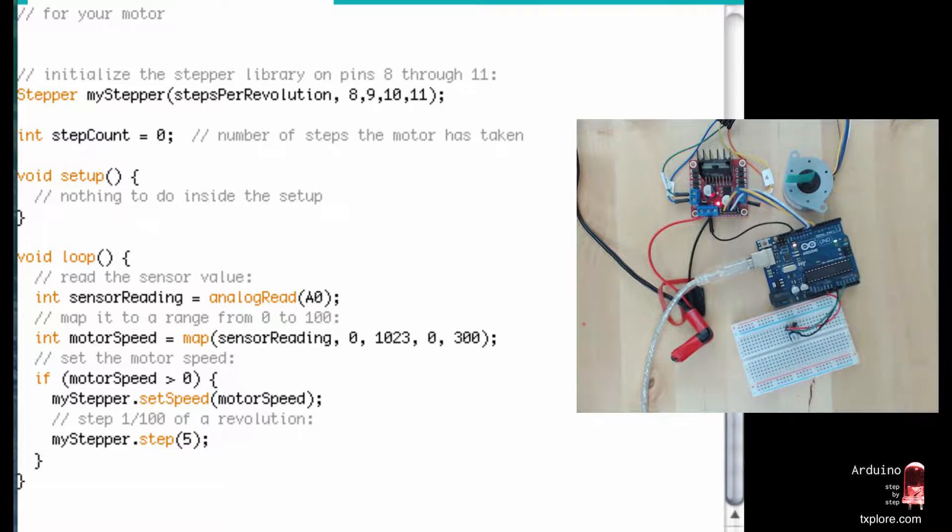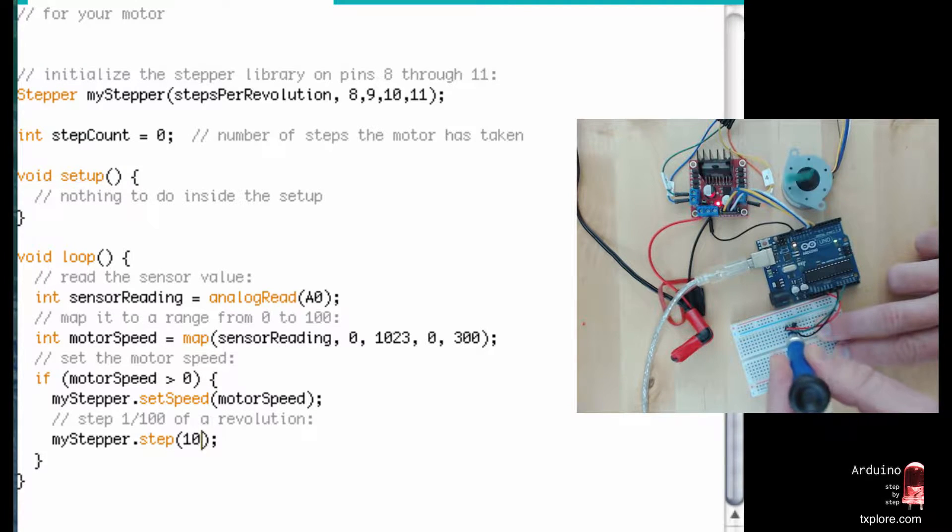What if I make that ten? Let's see what's the limit and when it's going to start skipping steps. I'm at maximum now on the potentiometer. It doesn't look like the motor. Okay, there was a lag. It doesn't seem like the motor is capable of following quickly enough the position of the potentiometer.